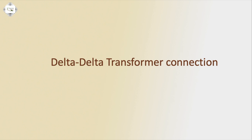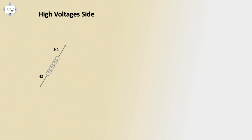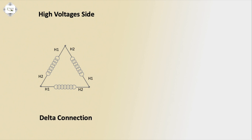Hello viewers, today I discuss the delta-to-delta transformer connection. High voltage side — three coils S1, S2. High voltage side delta connection, input rated high voltage 11kV.